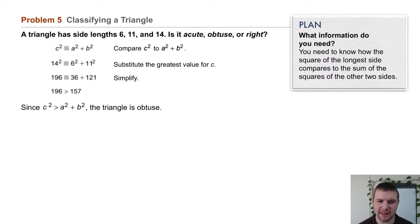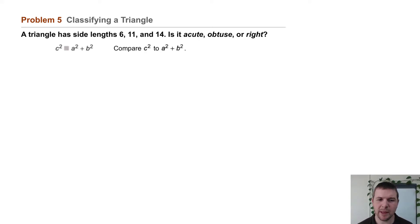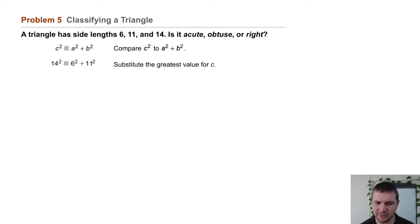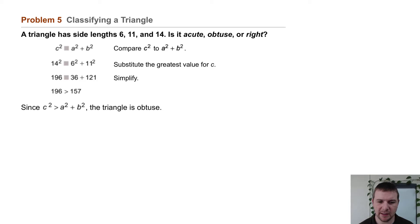Problem 5: Classifying a triangle. A triangle has side lengths 6, 11, and 14. Is it acute, obtuse, or right? We'll compare C squared to the sum A squared plus B squared, substituting the greatest value for C. Is 14 squared less than, equal to, or greater than 6 squared plus 11 squared? Simplifying, we find that 196 is greater than 157. Since C squared is greater than A squared plus B squared, the triangle is obtuse.